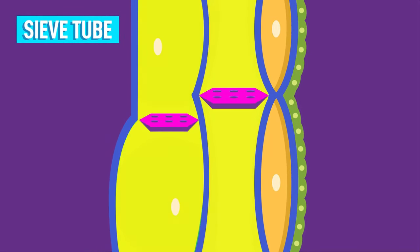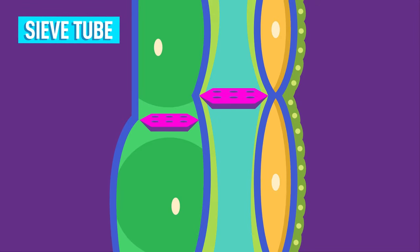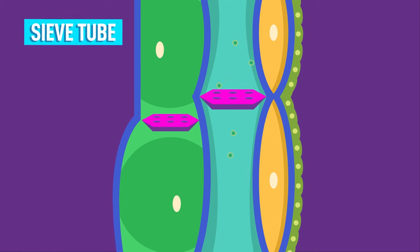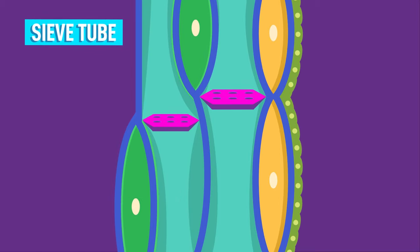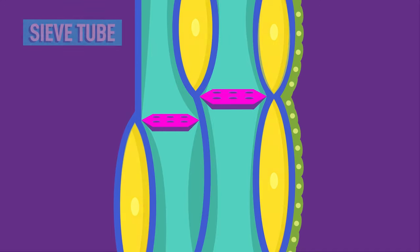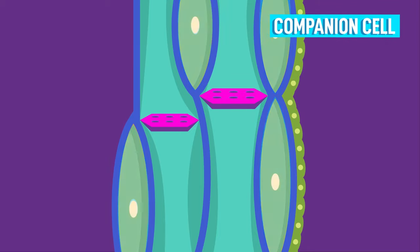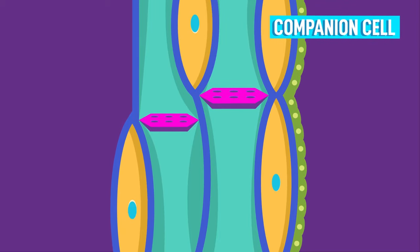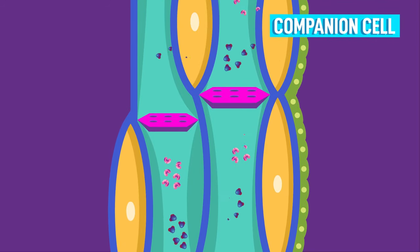A sieve tube consists of a single row of elongated, thin-walled cells. Just like the name suggests, it has walls perforated by minute pores like a sieve. A mature sieve cell has a thin layer of cytoplasm, which conducts manufactured foods from one cell to another. The sieve tube cell has a degenerated protoplasm, which means that it needs another cell to carry out its vital processes. This is why a sieve tube cell has a companion cell. The companion cell has everything that the sieve tube doesn't, such as abundant cytoplasm and nucleus.